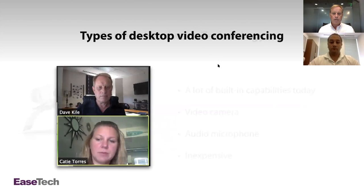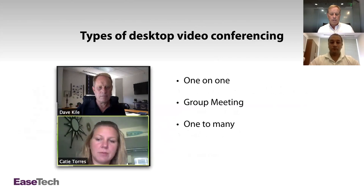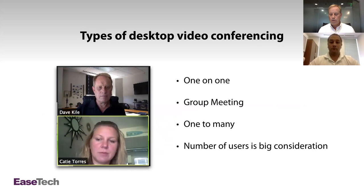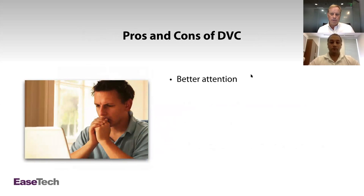I want to talk about three different types of video conferencing, because it makes a big difference when evaluating software. The first type is one-on-one — for example, if you're doing interviews. A group meeting is for multiple locations or people spread out across the country having regular conversations. Then there's one-to-many, like a webinar — what we're doing right now. You need to think about the numbers of users, and whether you have group meetings or one-to-many, when evaluating software and hardware.